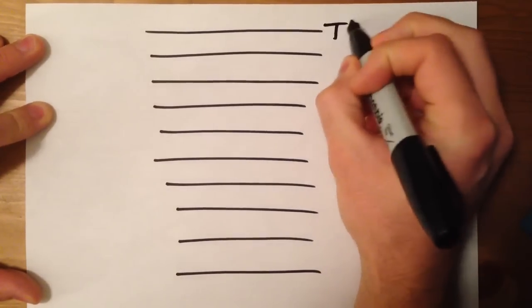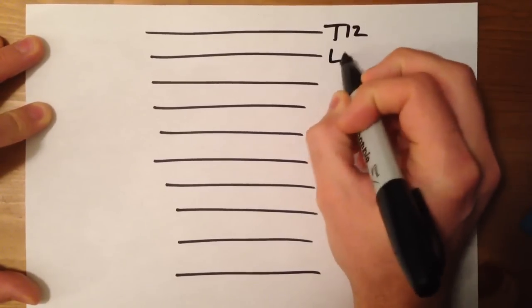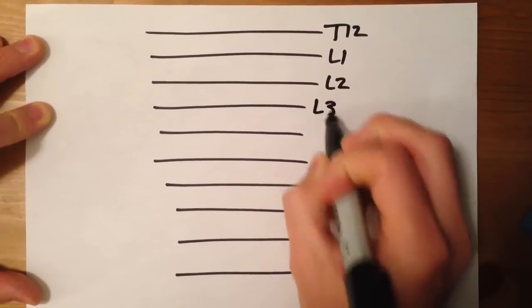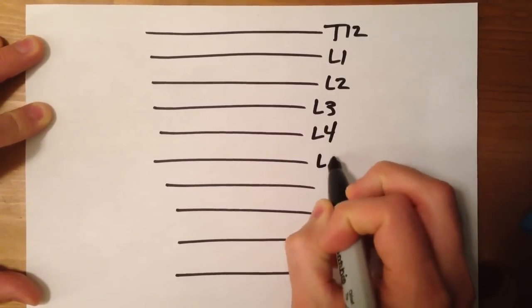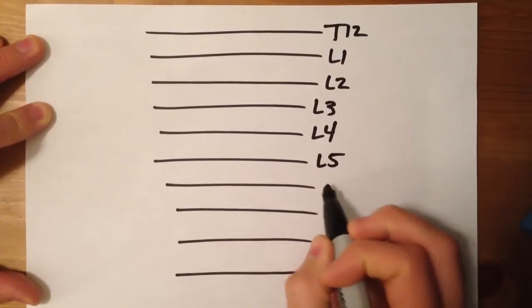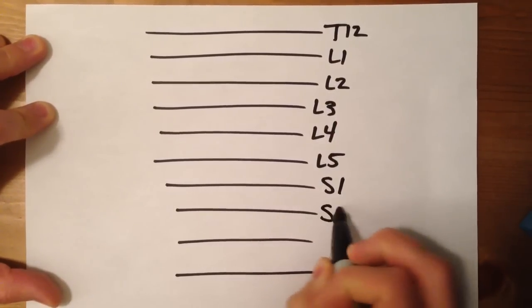And then we're going to label them, T12, L1, okay, so all lumbar, then you go to sacral levels.